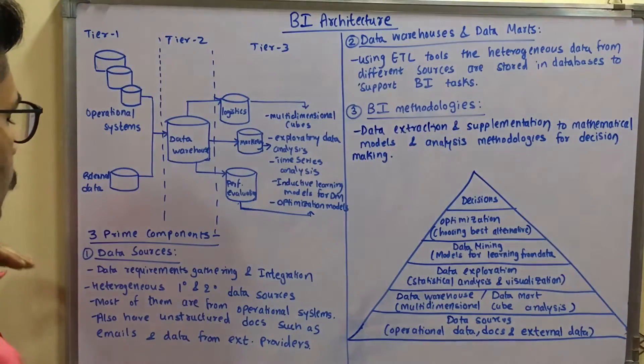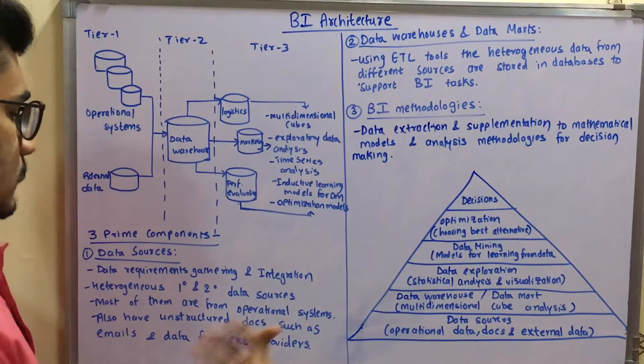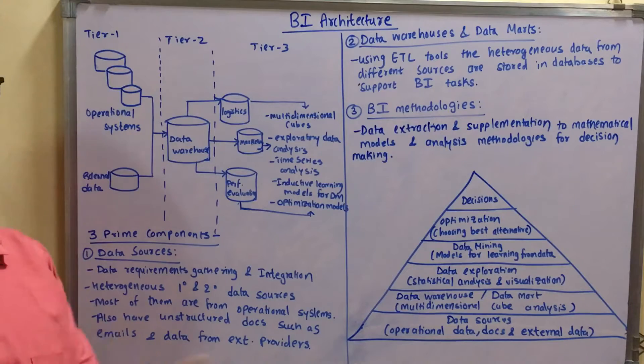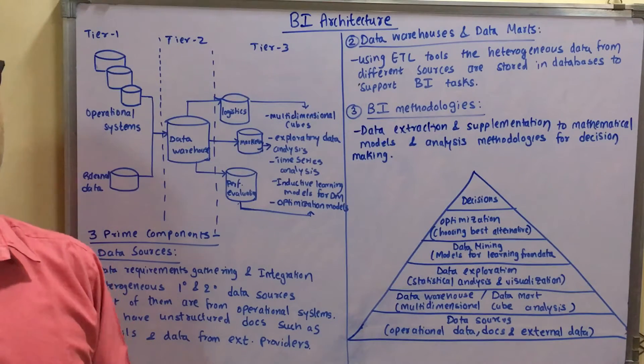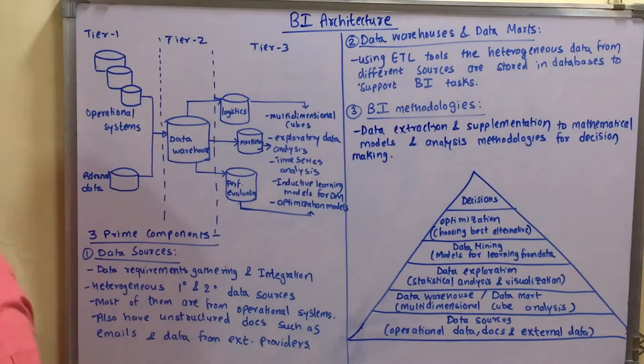Operations is what majorly contributes into the data sources, that is in Tier 1. Then you have all the unstructured documents such as emails, data from external providers, email servers, IP servers and all those things. This comprises all the data sources from the architecture of BI.